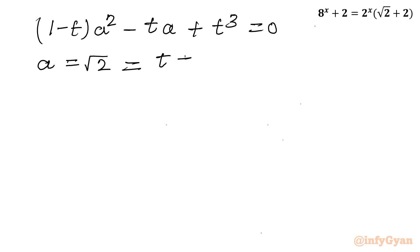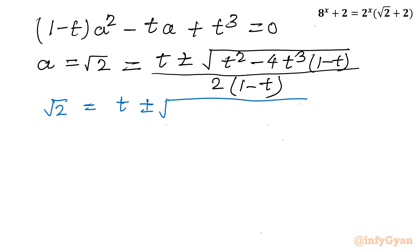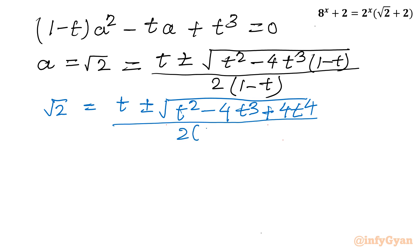Applying the quadratic formula: a = [t ± √(t² - 4·(1-t)·t³)] / [2·(1-t)]. Expanding under the radical: t² - 4t³ + 4t⁴. The numerator terms simplify as we evaluate the discriminant.